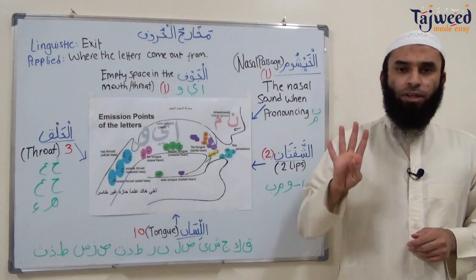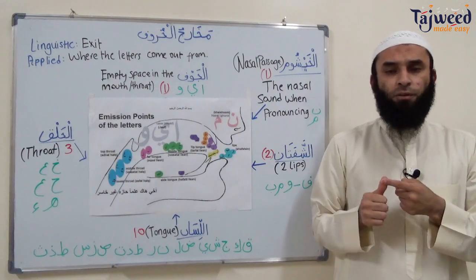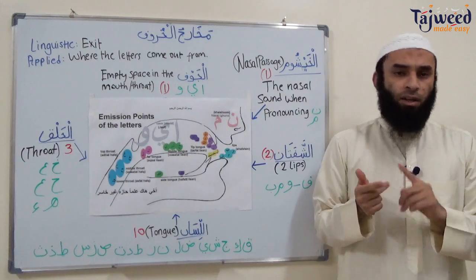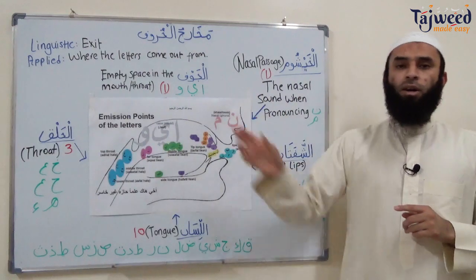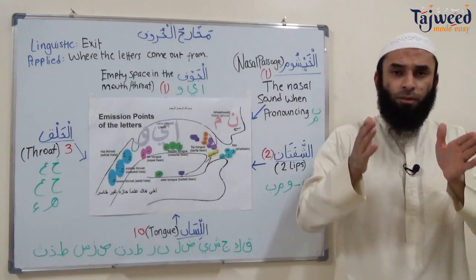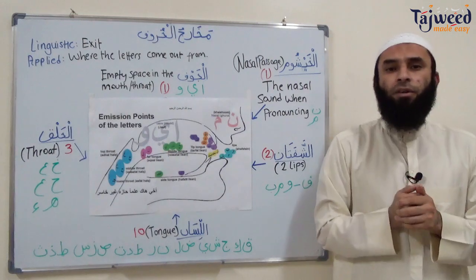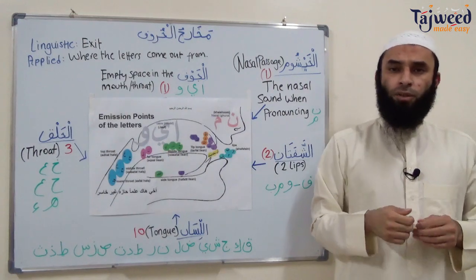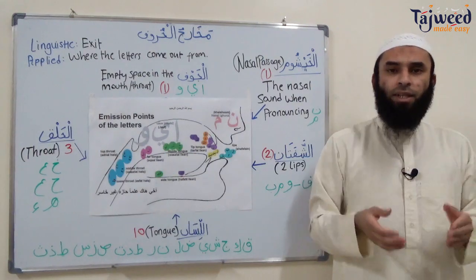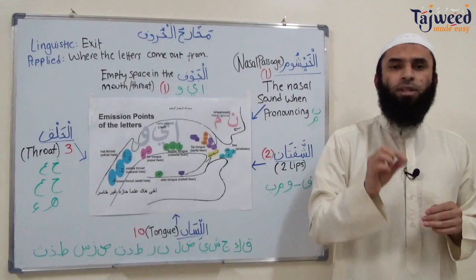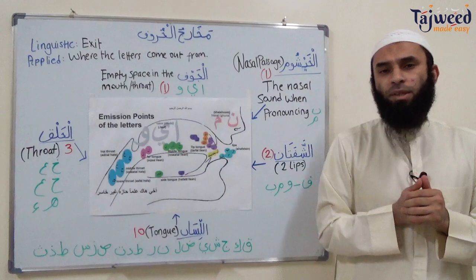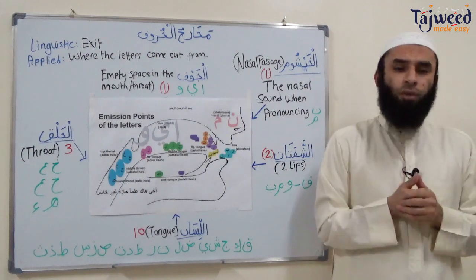We'll find out four things today. Number one, the definitions of مَخَارِجُ الْحُرُوفِ. Number two, how to pinpoint a مَخَارِجُ الْحُرُوفِ. Number three, a summary of what مَخَارِجُ الْحُرُوفِ is. And number four, we're going to start one of the first of the five areas of مَخَارِجُ الْحُرُوفِ, which is Al-Jawf. We'll find out where is this area, how many letters, how many points, how many مَخَارِجُ points inside this area, and also we're going to look at some of the common mistakes that people fall into, so we avoid them.